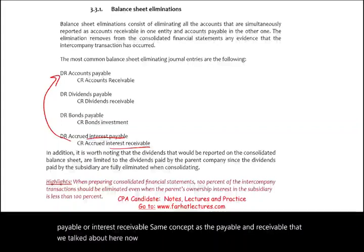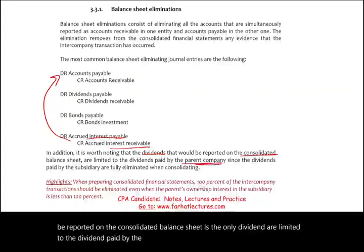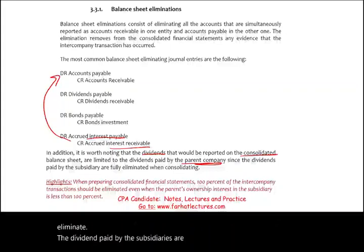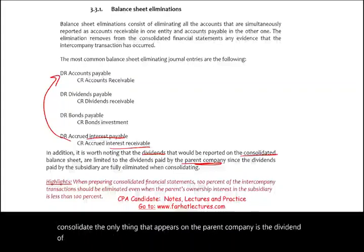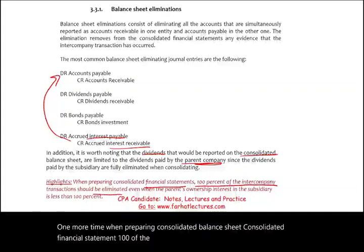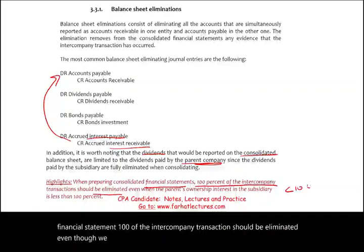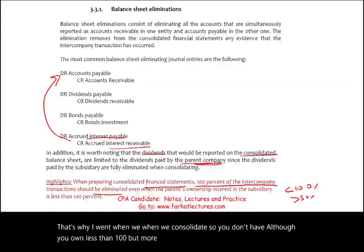It's worth noting that dividends reported on the consolidated balance sheet are limited to dividends paid by the parent company, because when we consolidate, dividends paid by the subsidiaries are fully eliminated. One more time: when preparing consolidated financial statements, 100% of intercompany transactions should be eliminated even though the parent owns less than 100% — but more than 50% — of the subsidiary.